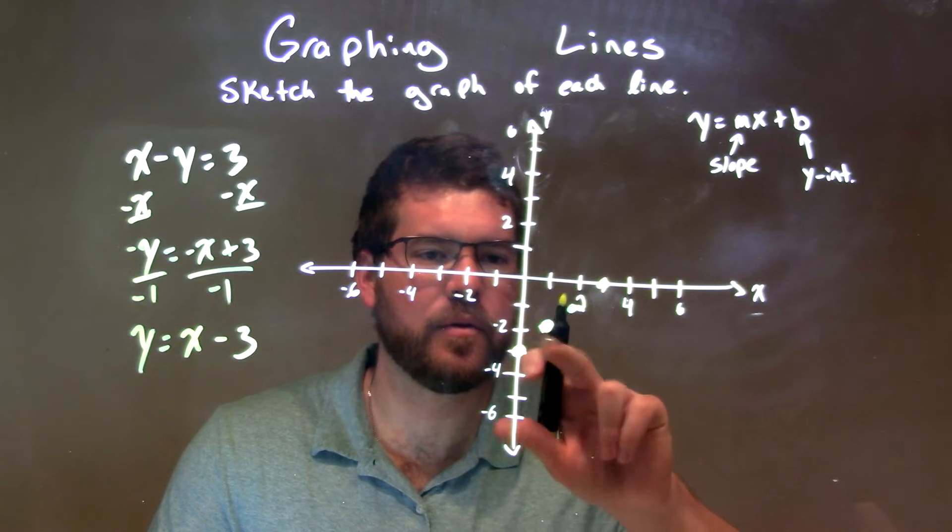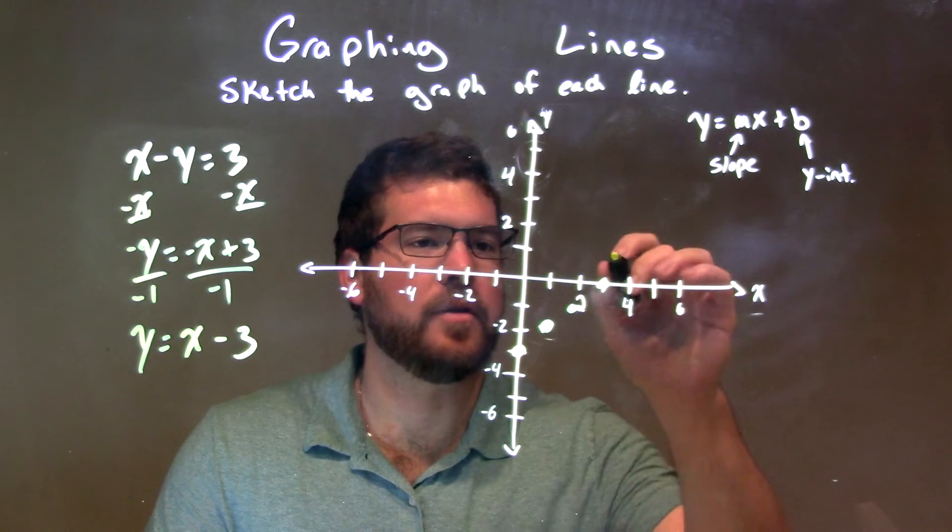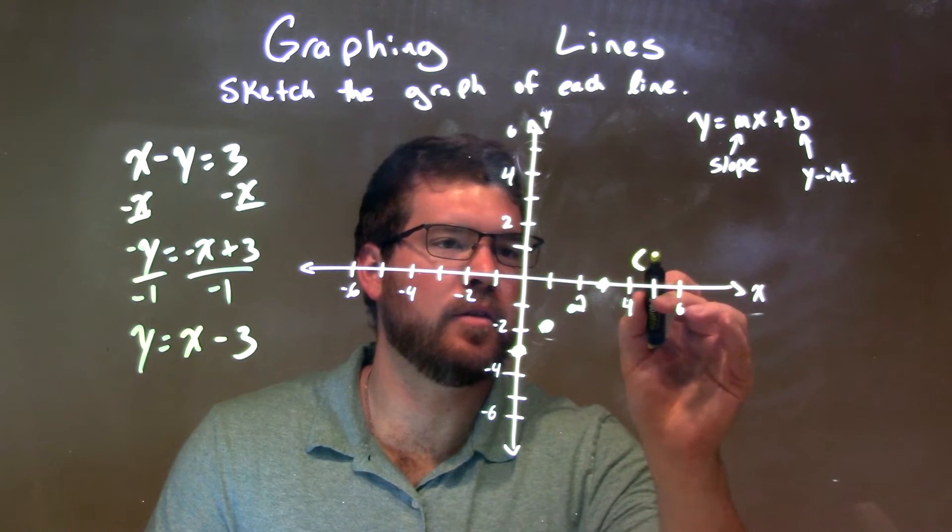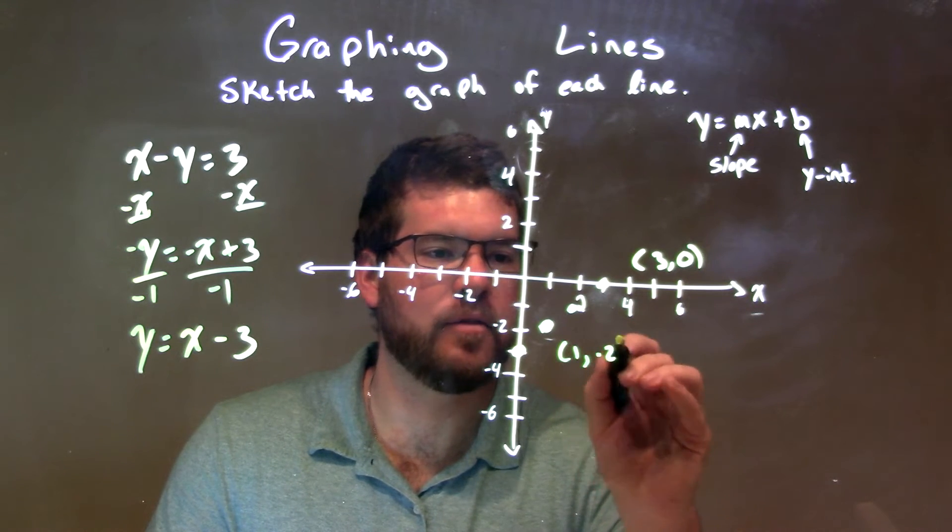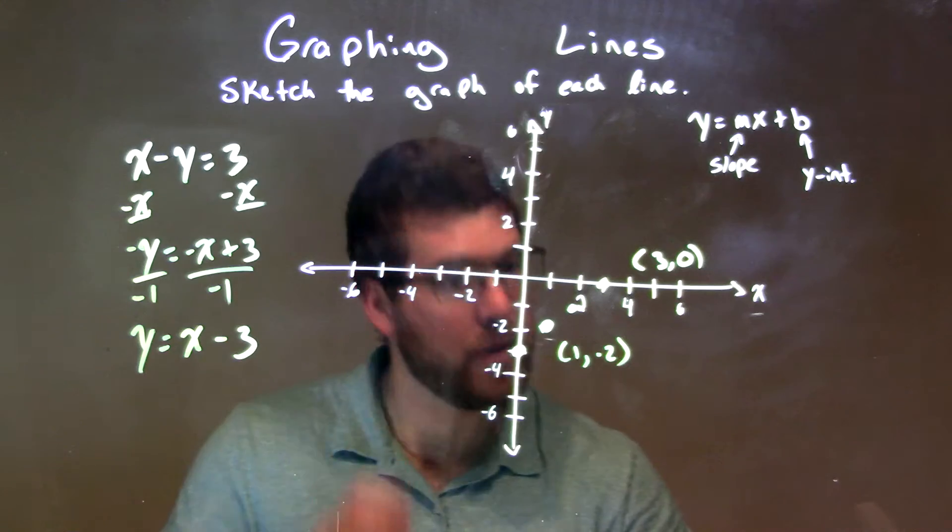We have our points here. Put some extra points, and this final one here is at 3 comma 0, and this one here is at 1 comma negative 2, and add the one in the middle.